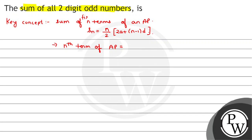The nth term of an AP: an = a + (n-1)d. We have the sum of all two-digit odd numbers: 11, 13, 15, 17, up to...